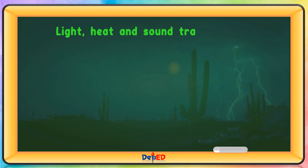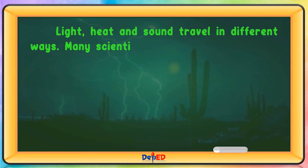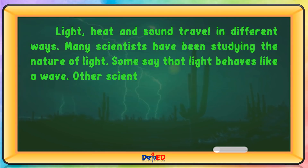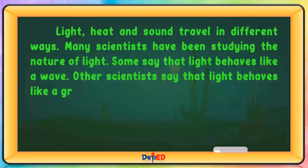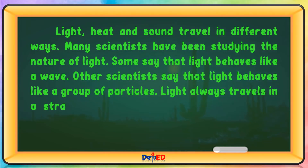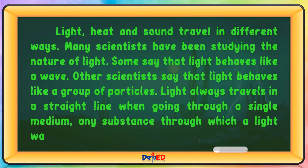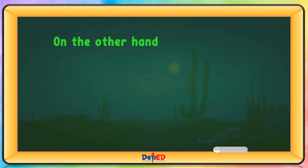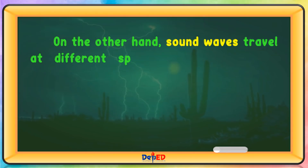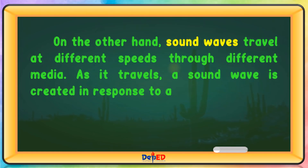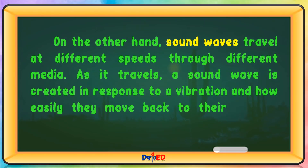Light, heat, and sound travel in different ways. Many scientists have been studying the nature of light. Some say that light behaves like a wave; other scientists say that light behaves like a group of particles. Light always travels in a straight line when going through a single medium — any substance through which a light wave can travel. Sound waves, on the other hand, travel at different speeds through different media. A sound wave is created in response to a vibration and how easily particles move back to their original position.